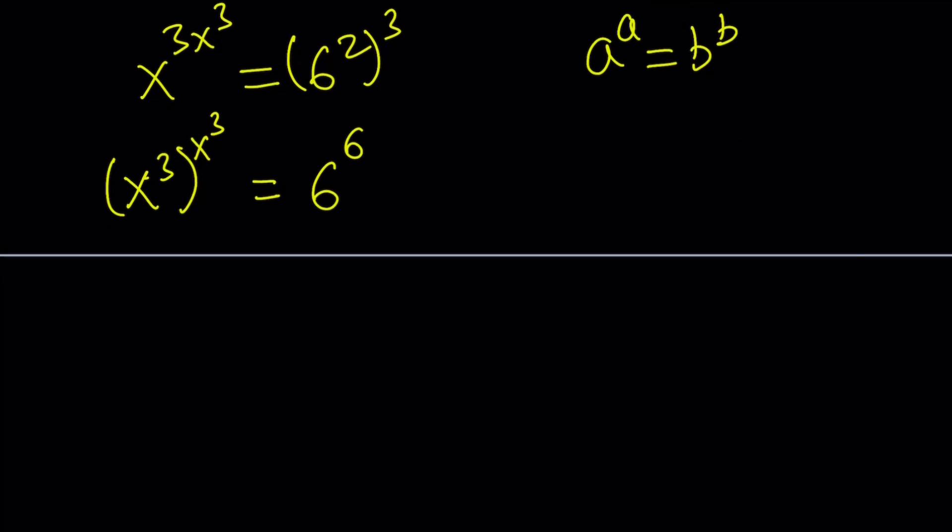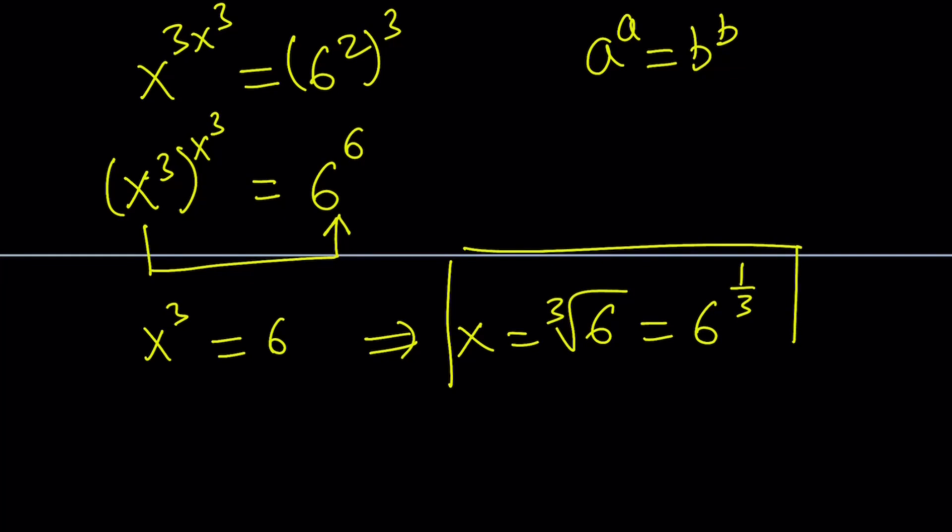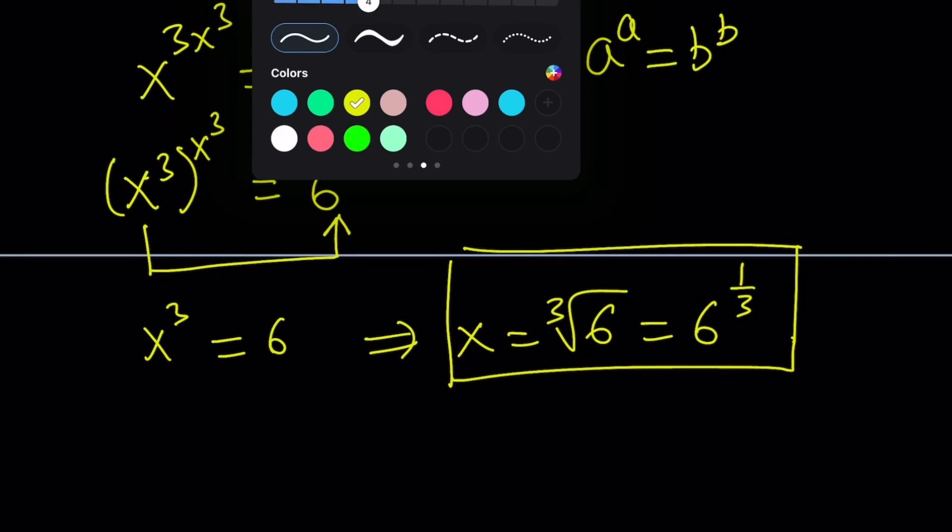So one to one correspondence tells us that x cubed equals 6 works, meaning that the cube root of 6 is a solution to this equation. We can also write it as 6 to the power 1 third. It doesn't mean there are no other solutions. It just means that we got one of the solutions to this equation. Now, next step is going to be to find the other solutions or to prove that there are no other solutions. That's why we're going to do a little bit of calculus.